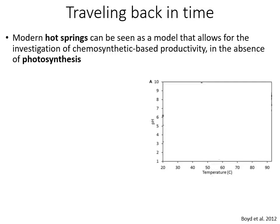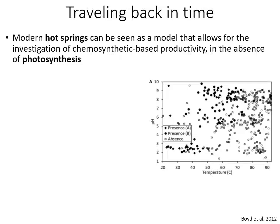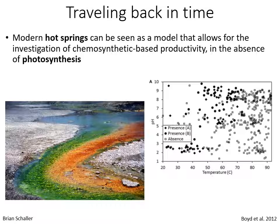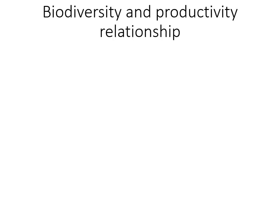Modern hot springs can be seen as a model that allows us to investigate chemosynthetic-based productivity in the absence of photosynthesis, because in hot springs we have inhibition of photosynthesis based on pH — shown on the y-axis — and temperature — shown on the x-axis. With the white squares we see that photosynthesis genes are absent, which means that primary productivity in this environment is based on chemosynthesis. So when we go to a hot spring we can travel back in time as we increase in temperature and decrease in pH.